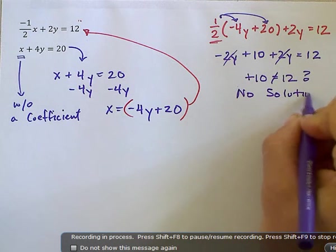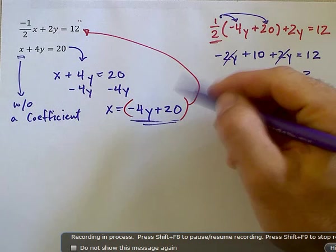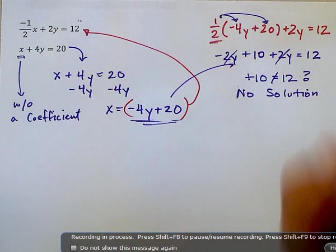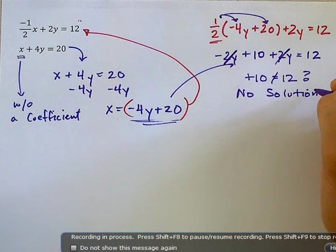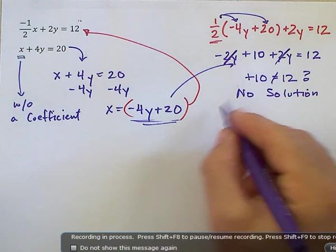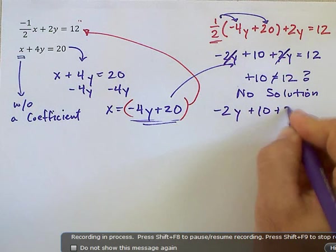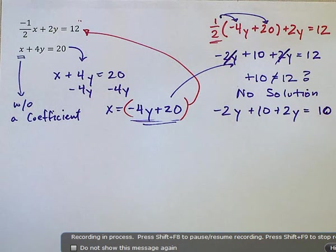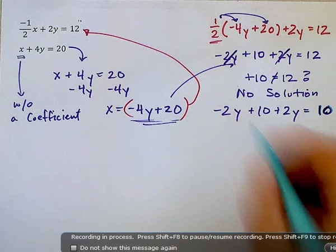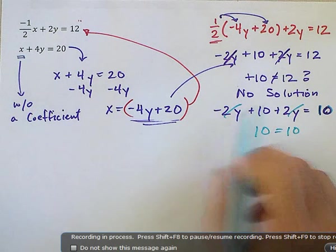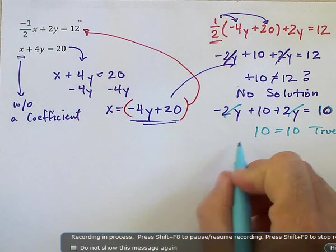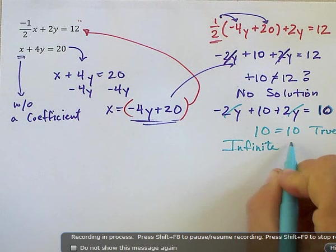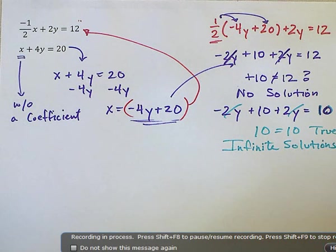So if it ever comes up that you substitute, and when solving for the other variable, you end up where something is not equal, and the variables cancel out, this will end up being no solution. Let's just say, by chance, this was a 10 instead. Let's say you had negative 2y plus 10 plus 2y is equal to 10. This is different. Let's set this equal to 10 here. And these cancel out, and you end up with 10 is equal to 10. When your variables cancel out, and you have a true statement, 10 is equal to 10, this is something that you would say would be infinite solutions. Here, if it's not equal, no solution.